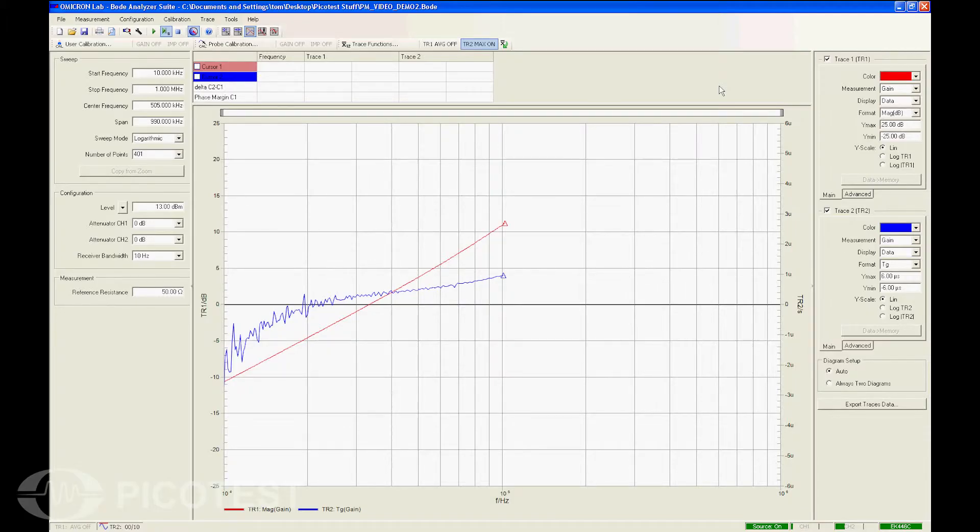In this plot, the red trace, 1, is the measure of the output impedance of the regulator circuit in dB. The blue trace, 2, is the group delay of the impedance, which is the derivative of the phase between the voltage and current.